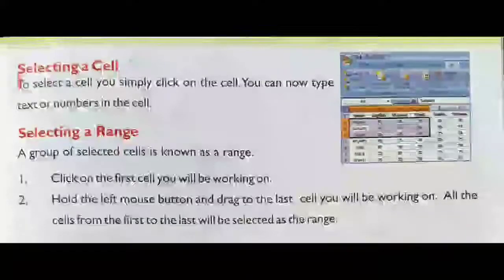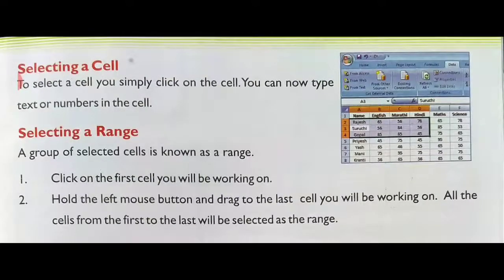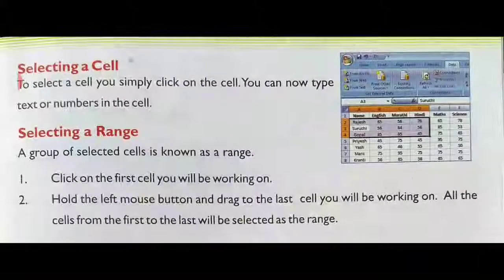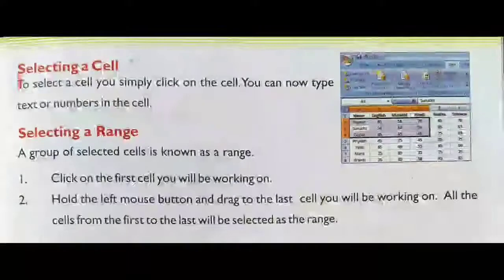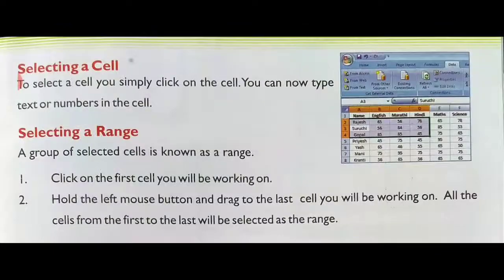Second, selecting a range. A group of selected cells is known as a range. Whenever we select more than two cells together, that is a range. First, click on the first cell you will be working on. Then hold the left mouse button and drag to the last cell. All the cells from the first to the last will be selected as the range.